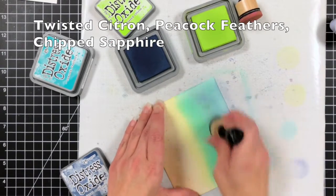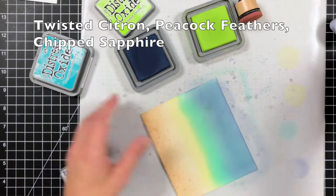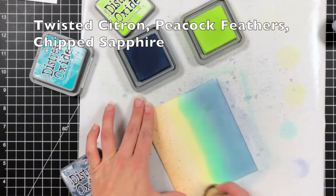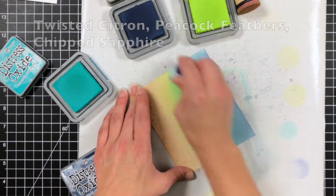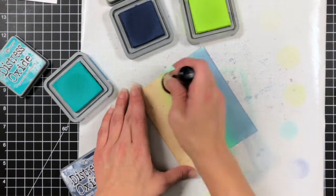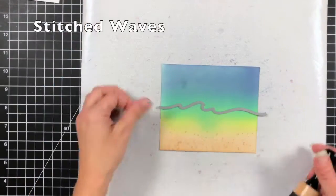I used twisted citron was the first color that I laid down and I went all the way down to the sea bottom with that. Then I did peacock feathers and then I came in with some chipped sapphire. I wanted the top of my waves to be a darker color and have that more light minty color towards the bottom.